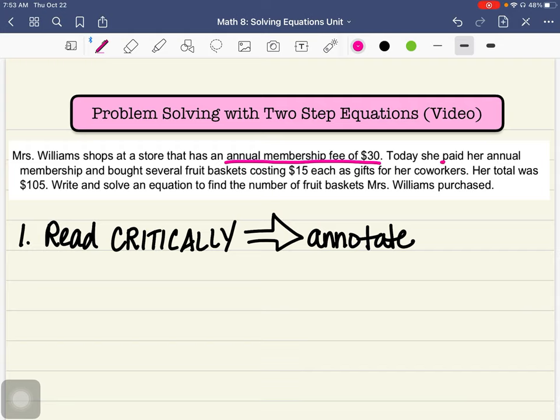She paid her annual membership and bought fruit baskets. So she bought fruit baskets that cost fifteen dollars each. And then it says her total was one hundred five dollars. So I know, according to this, that she paid a total of one hundred five dollars. They want us to write and solve an equation. Here's our end goal: find the number of fruit baskets Mrs. Williams purchased.